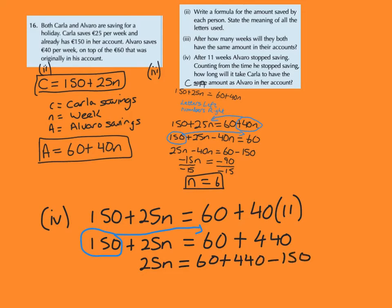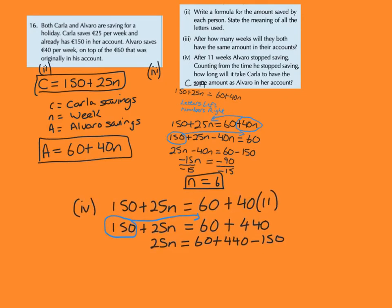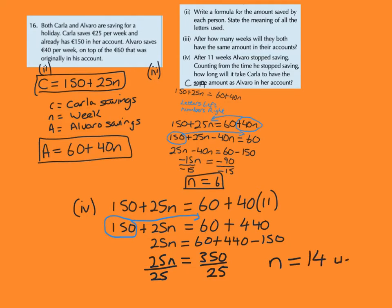I can simplify: bring 150 over to the far side and I get 25n equals 60 plus 440 minus 150. Remember it's a minus because when we bring it over the far side of the equals sign it becomes the opposite sign — that comes from our balancing method. So 25n equals 500 minus 150, which is 350. Divide both sides by 25 and n equals 350 divided by 25, which is 14 weeks.